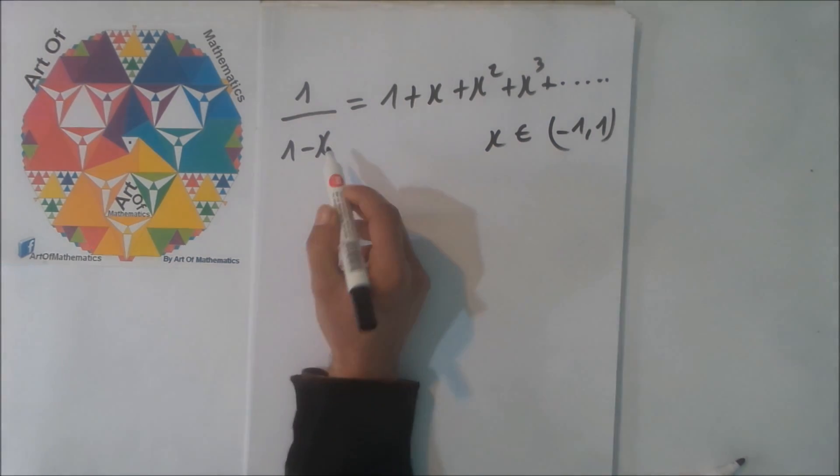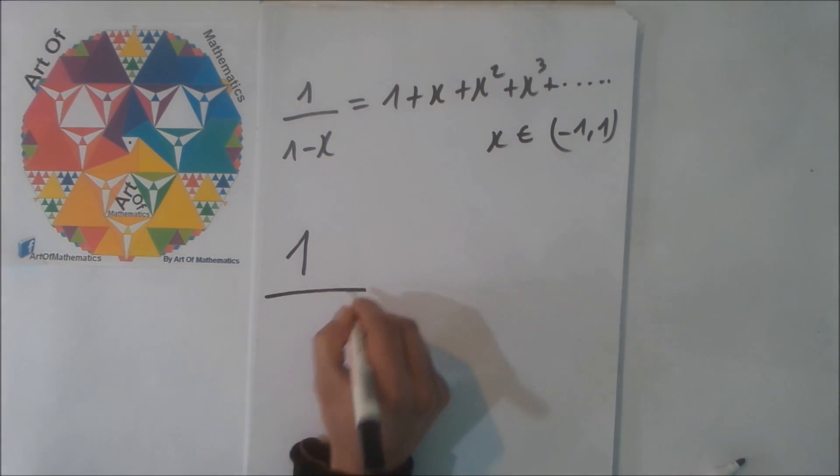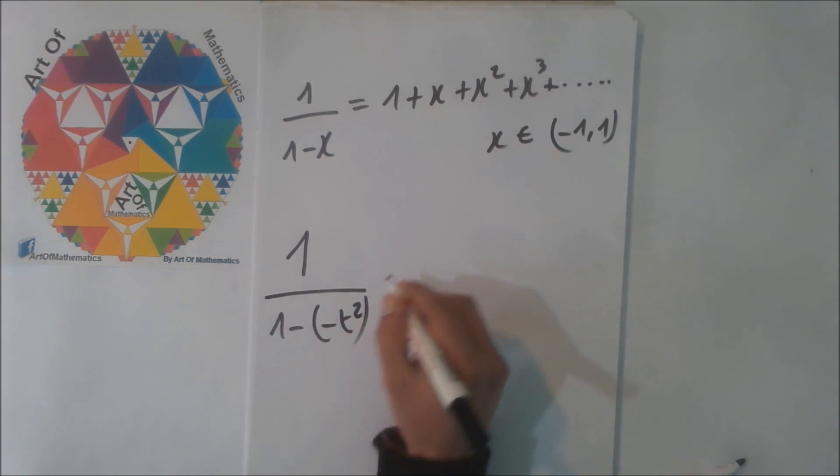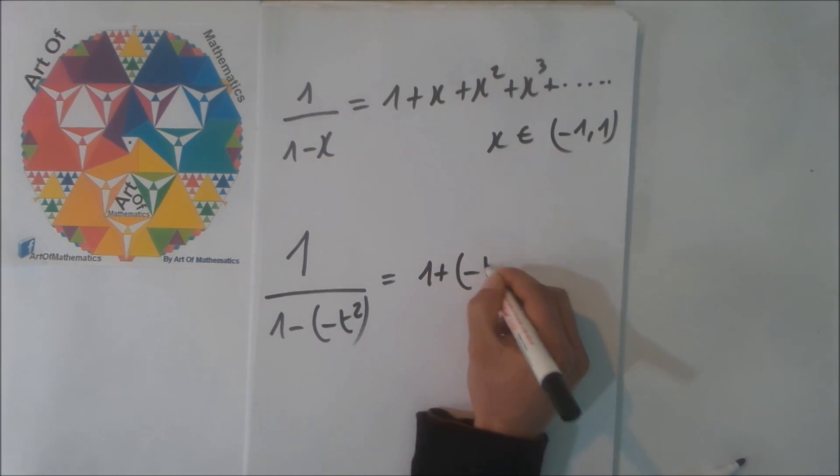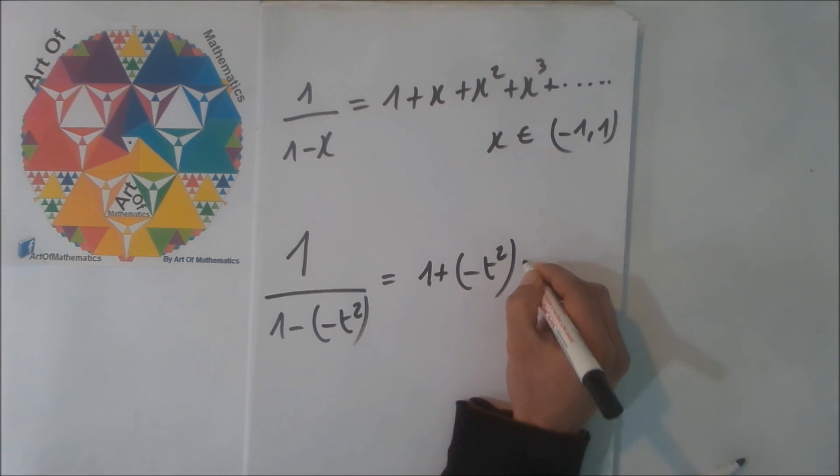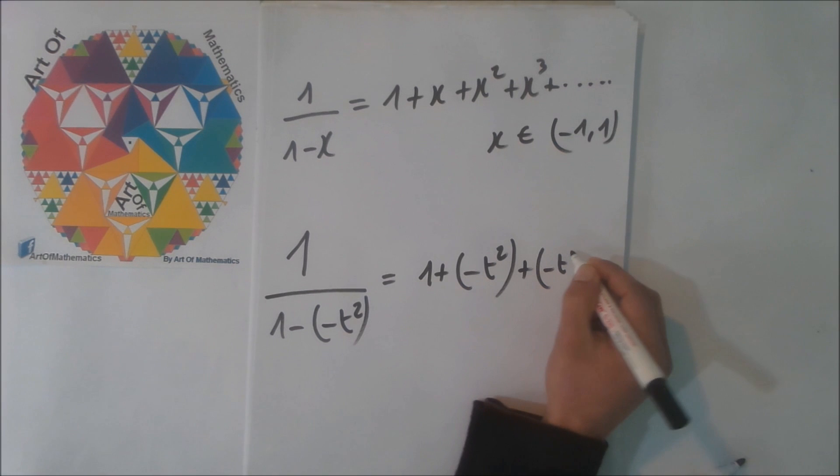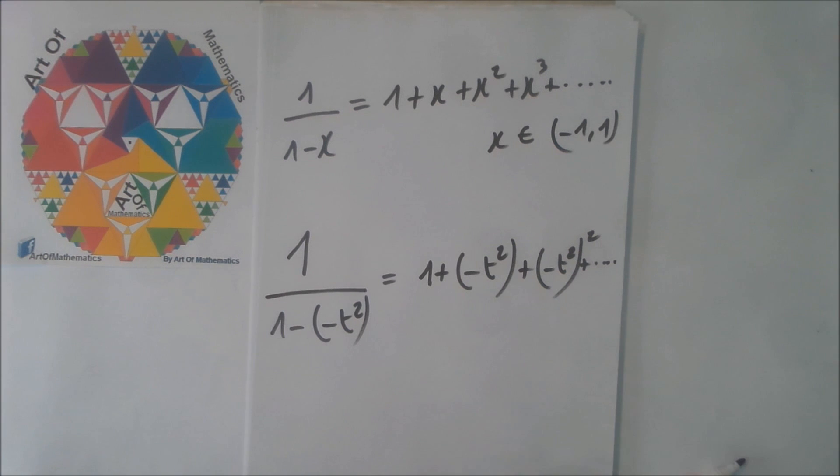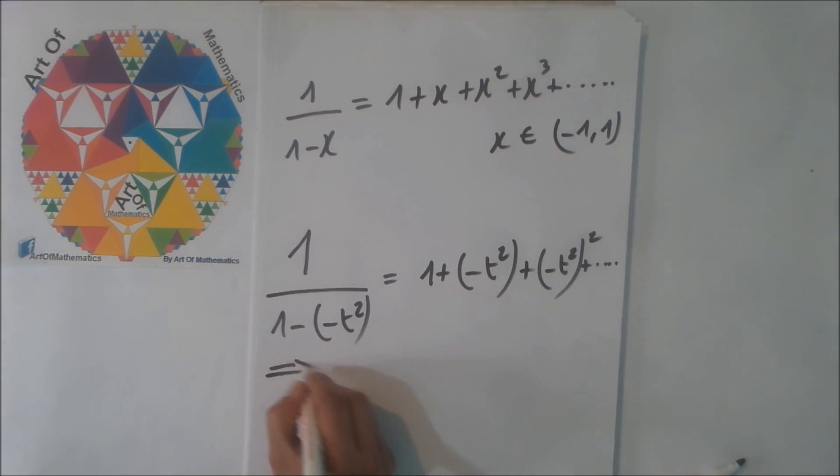Now, in x, we put minus t squared. So this example becomes 1 minus, 1 divided by 1 minus t squared, and that's implied that...